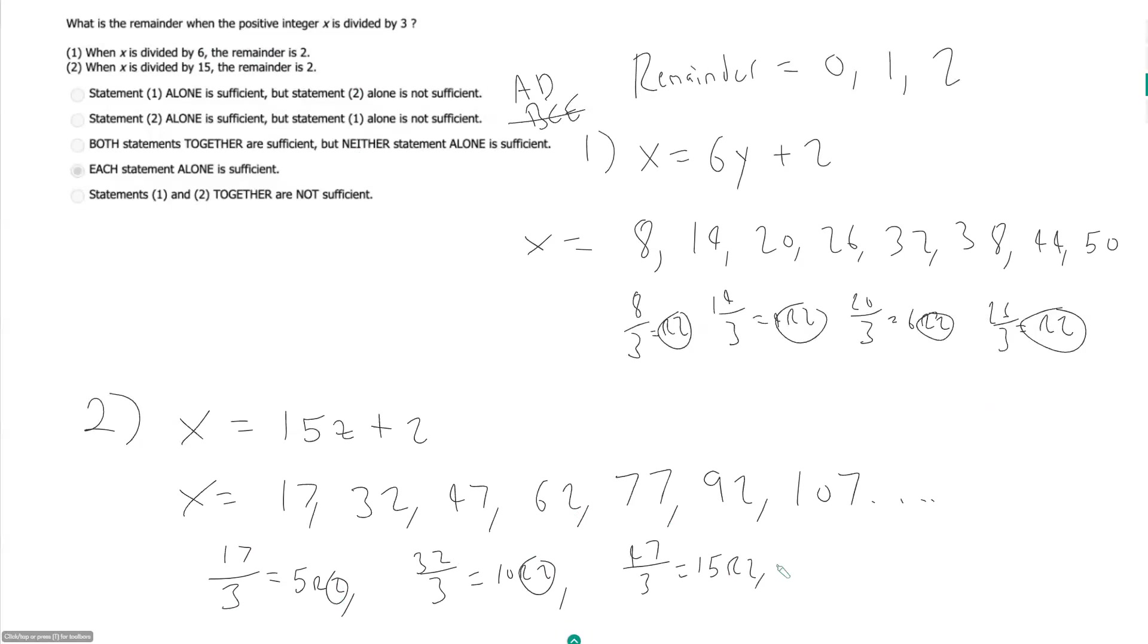we did 4 here, so might as well do 4 examples here. But I'm thinking, we're headed for D. 62 divided by 3 is 20 remainder 2. So it looks like each statement is sufficient to tell us our remainder is 2.